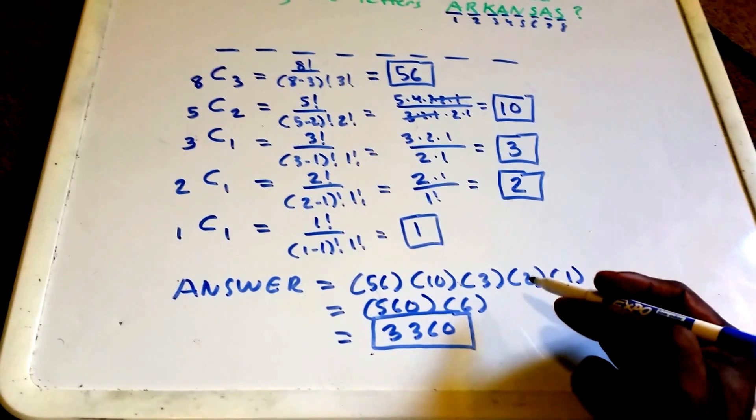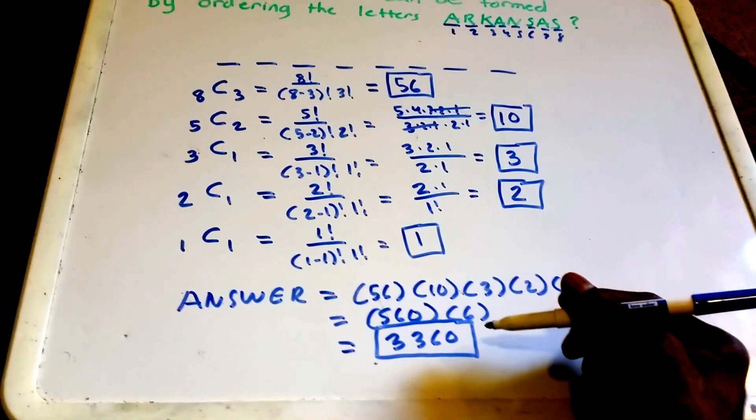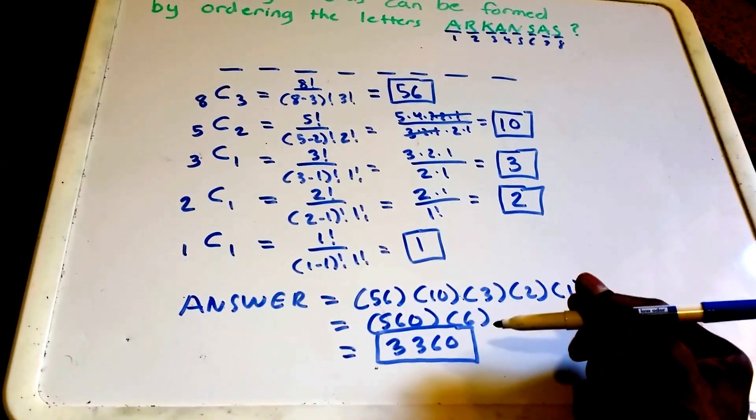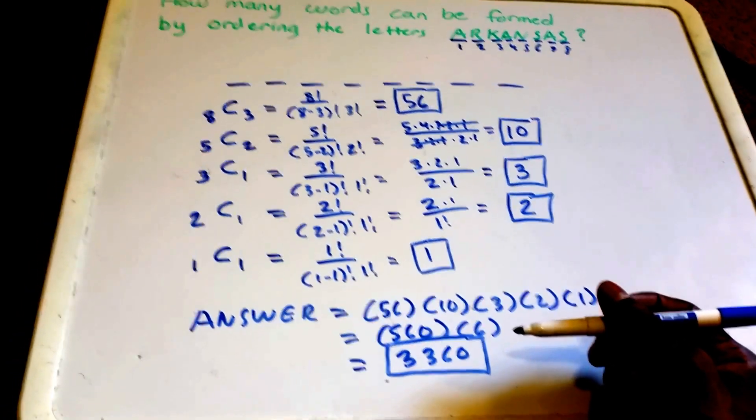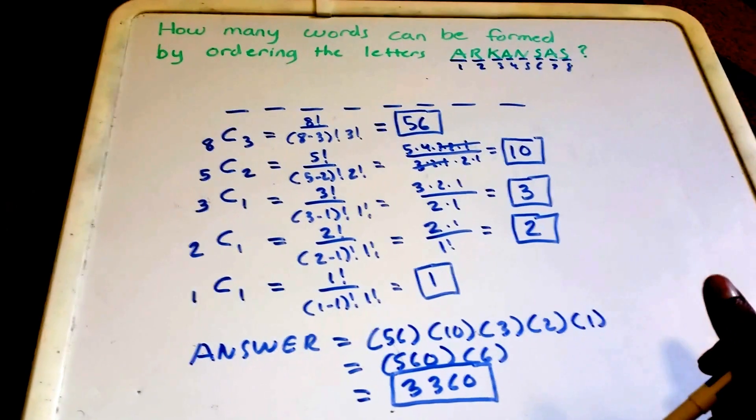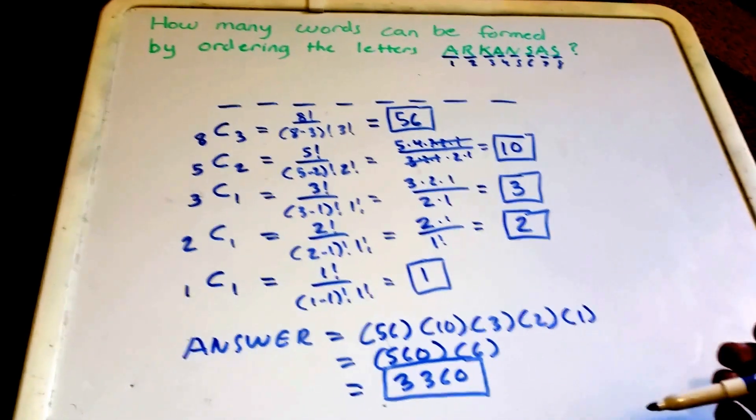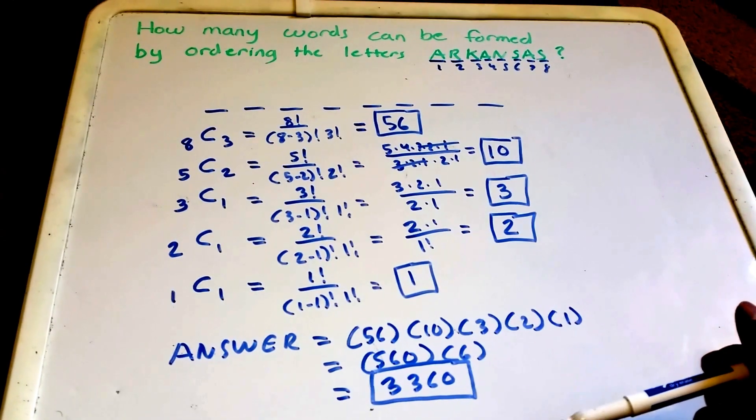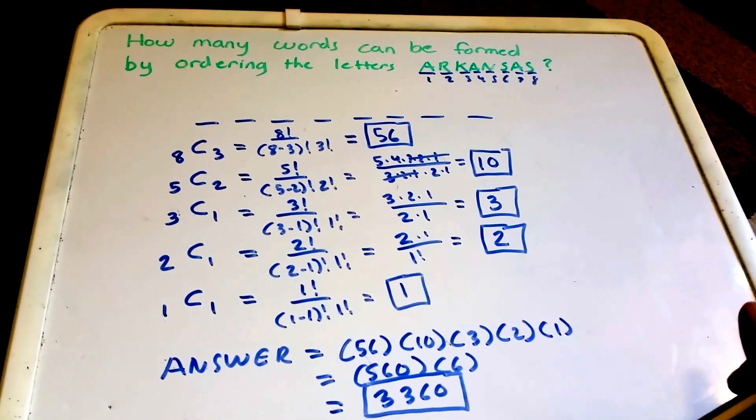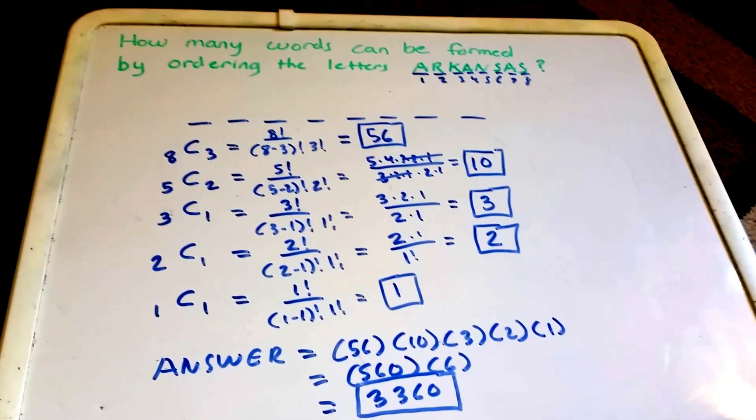Which is our answer. So there are 3,360 different words that can be formed by ordering the letters in Arkansas. Thank you guys, I hope you enjoyed this video. Please leave likes, comments, questions, because I definitely make mistakes in videos and in my math sometimes. Don't forget to subscribe. Thanks as always for watching, and I'll see you all in the next video.